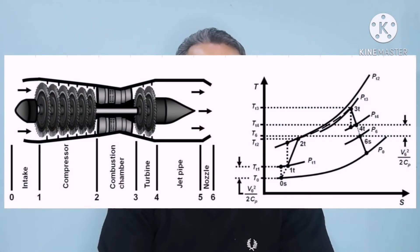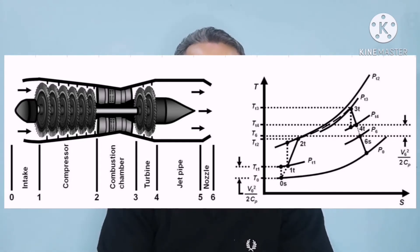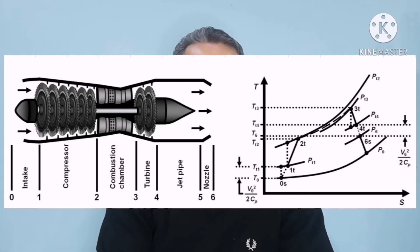As you can see in the slide, it's a schematic for the turbojet and the TS diagram for the turbojet engine. Each component has been labeled for each station, which is very useful in order to calculate the performance for each component. Starting with state 0, 1, 2, 3, 4, 5, and eventually state 6.